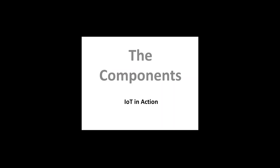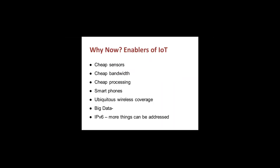Now let us talk about the components of IoT. All components have become economical today. First, cheap sensors — a thing without a sensor is a dumb thing, like a stone. Add a sensor to a stone and it becomes a smart device. Second, cheap bandwidth — I can collect data at home and transfer it over the internet because bandwidth is relatively cheap. Third, cheap processing — big data helps you process any amount of data at any point in time.